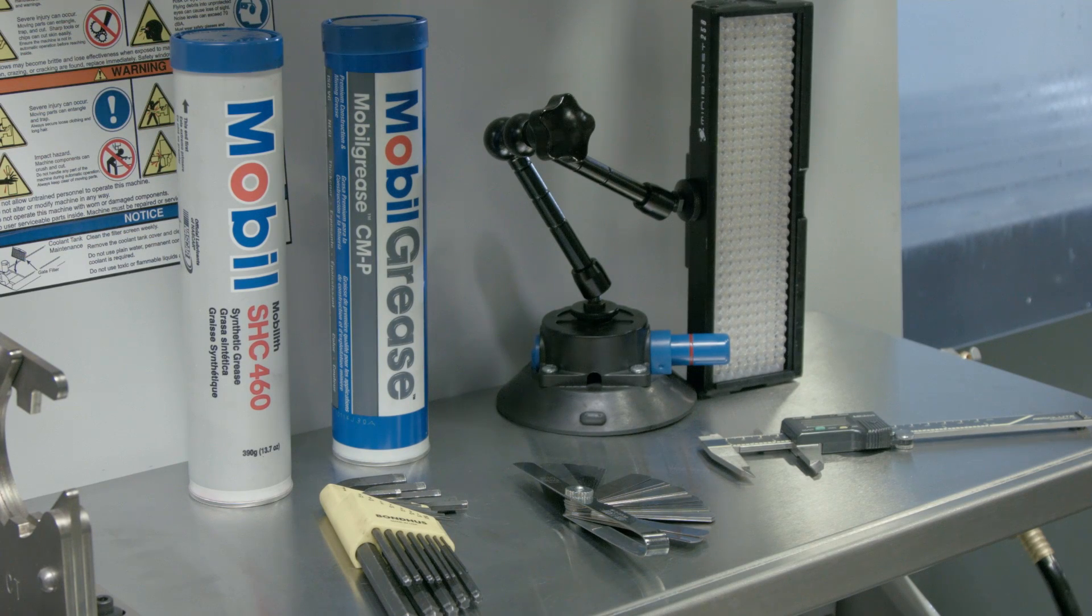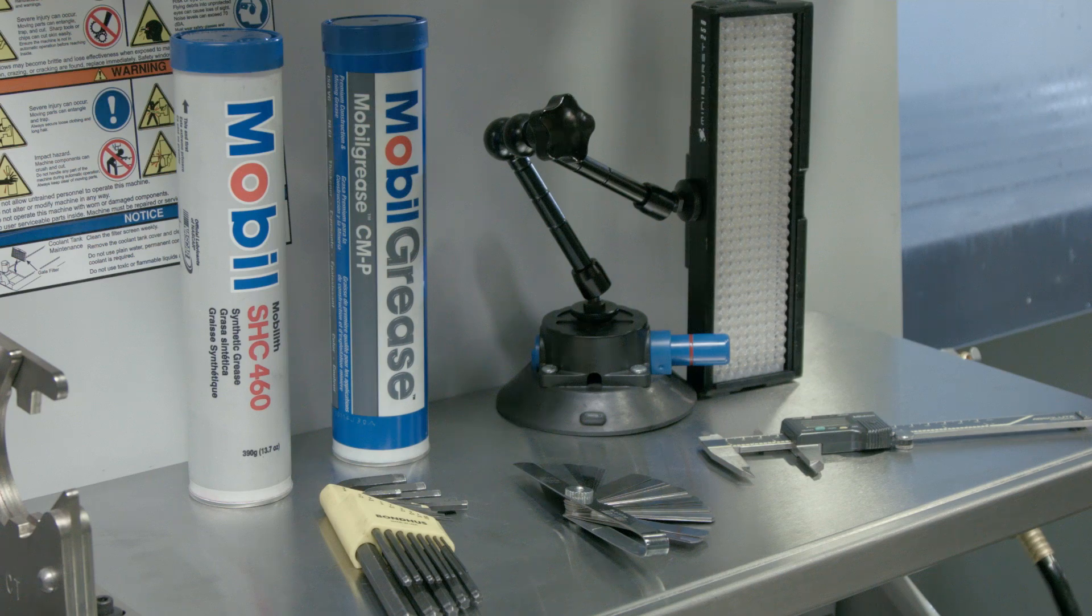A set of allen keys, portable light, a feeler gauge, calipers and some mobile grease.